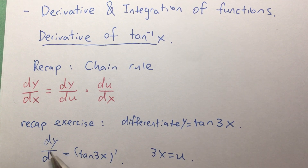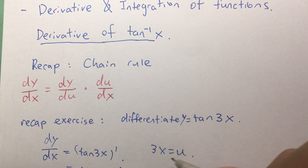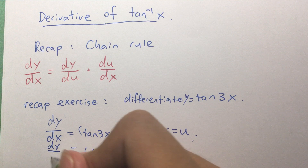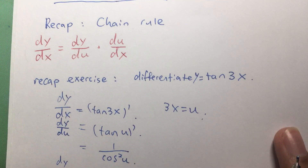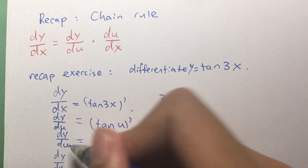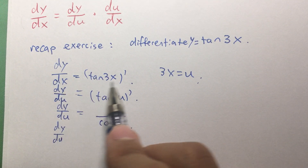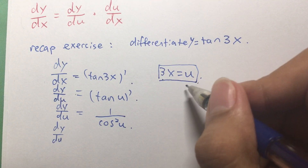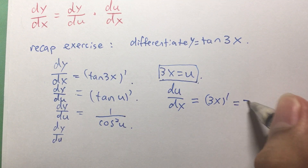Firstly, let's differentiate both sides, which gives dy over dx equals the derivative of tangent 3x. Let's assume 3x equals u first. So now we have dy over du equals the derivative of tangent u, which we know is equal to 1 over cosine squared u. Now we need to use the chain rule to find dy over dx. We differentiate u, so du over dx equals the derivative of 3x, which is equal to 3.